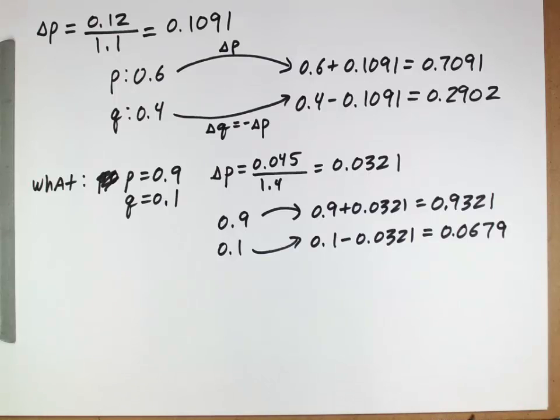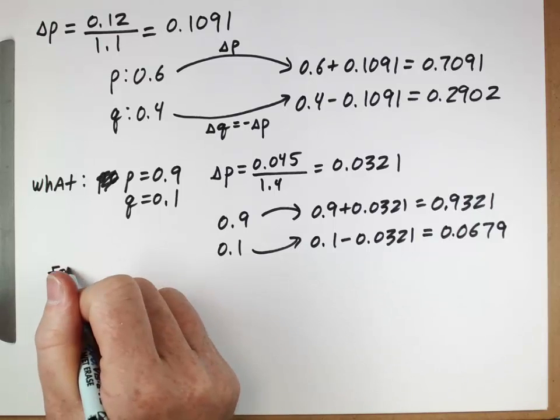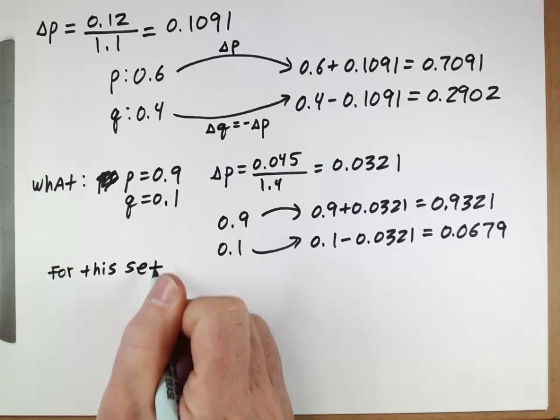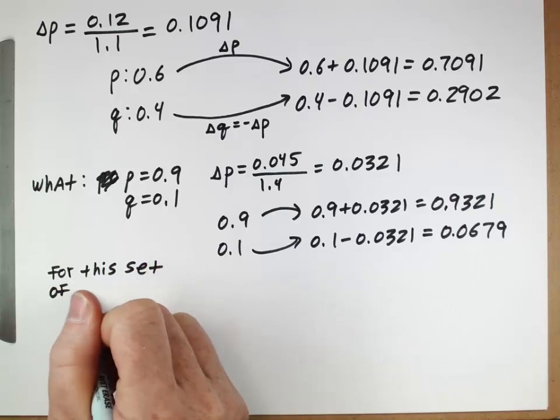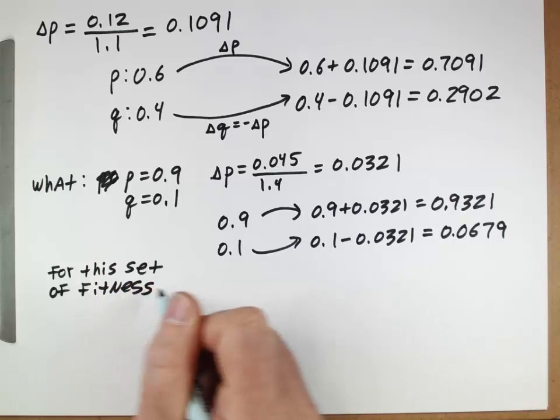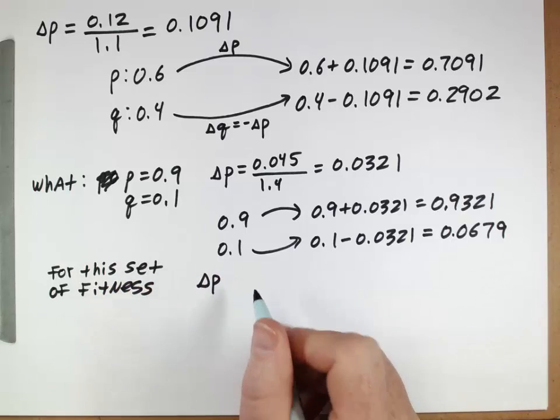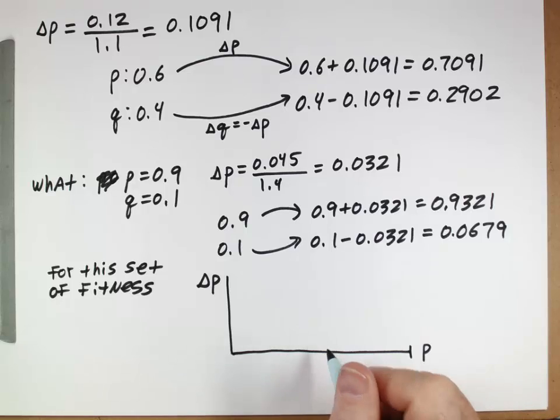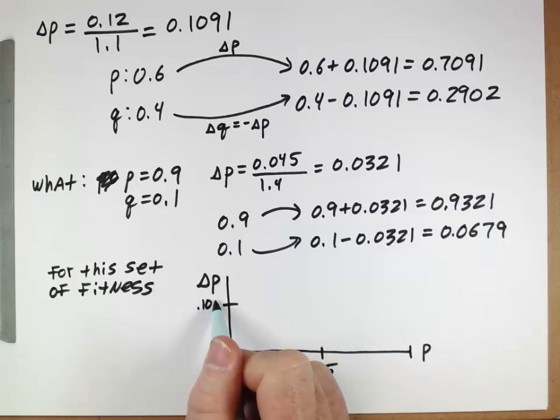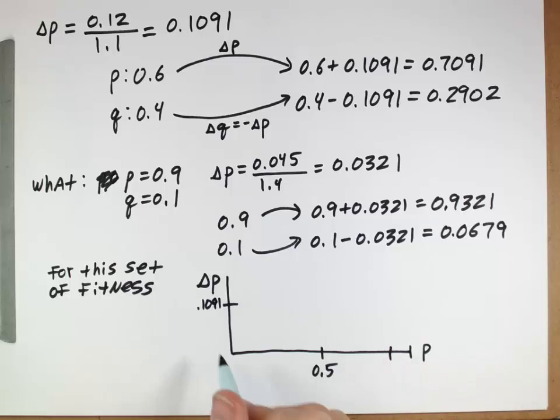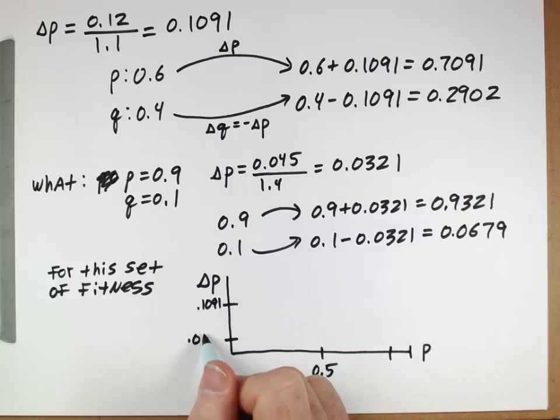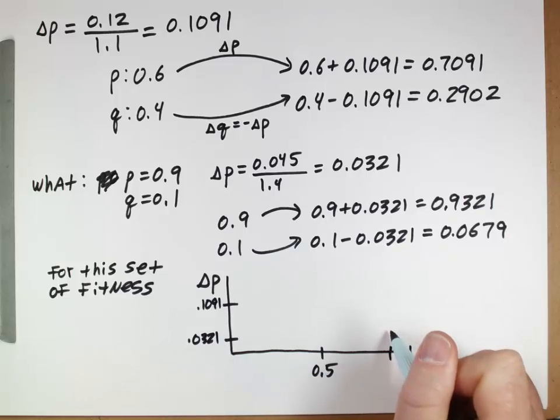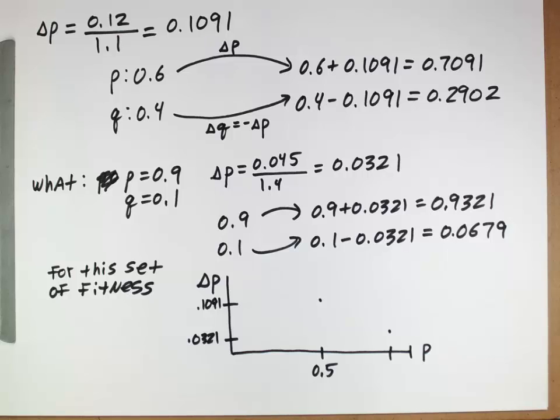And that gives us an interesting result if we think about for this set of fitnesses. The 1.5, the 1.0, and the 0.5. If we were to plot delta p that we would expect versus the actual value of p that we're working with, at 0.5, we end up getting this 0.1091. At 0.9, we end up getting this kind of 0.0321. So if we think about like a data point there and a data point there, it turns out that when you actually plot this, you get a curve that looks like this.